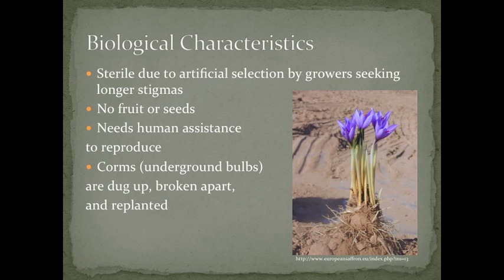The plant is sterile due to artificial selection by growers seeking longer stigmas. Therefore, it has no fruit or seeds and needs human assistance to reproduce. It reproduces through corms — underground starch-filled bulbs — which take about two years to mature.